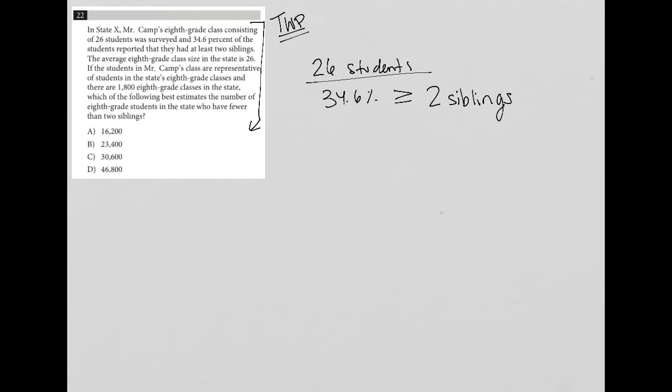The next sentence says if the students in Mr. Camp's class are representative of students in the state's eighth grade classes, and there are 1800 eighth grade classes in the state. So there are 1800 classes, which means that we'd be multiplying 1800 by 26 to figure out the number of students. I prefer to find this information as I do it instead of after the fact. So that means that we should expect there to be roughly 46,800 students across the state.